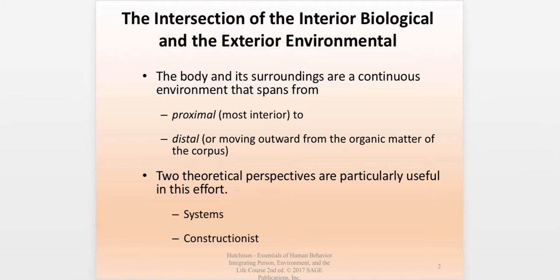In this chapter, we're going to look at the biological self through two different lenses: the systems perspective and the constructionist perspective. By far, most of this chapter focuses upon the systems perspective as it talks about the organs of the body and the various systems that coordinate them and make them function together.